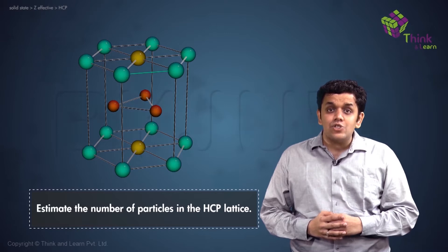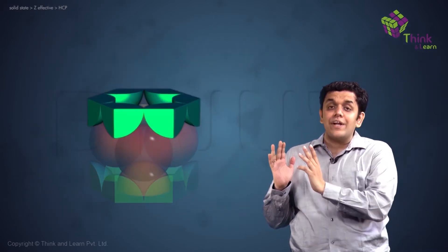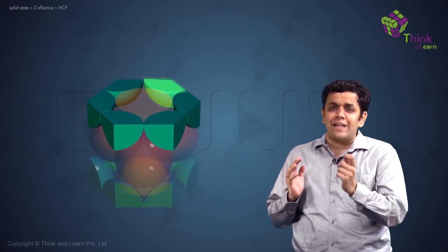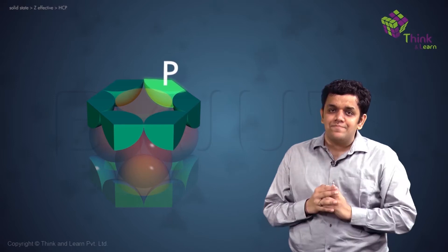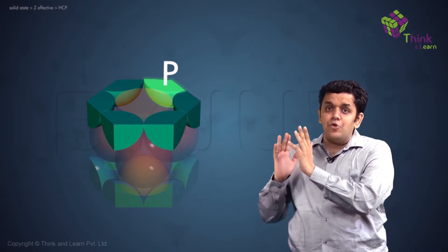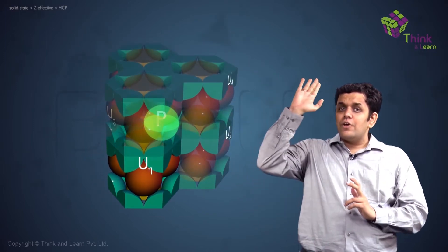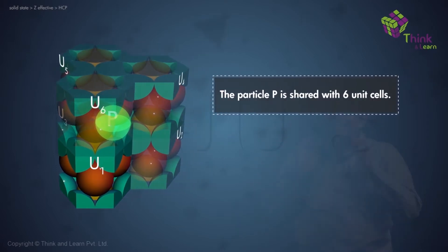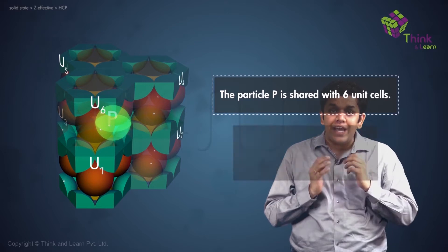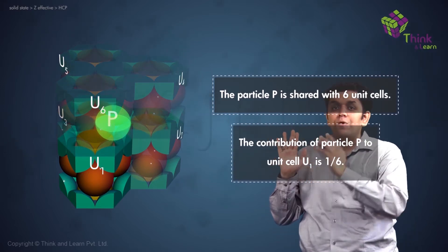Now, let us try and solve this together. Firstly, let us look at the particles located at the six corners of the top face of the hexagon. Let us take one such particle, say particle P. Now the particle P is being shared between unit cell U1, U2, U3 and U4, U5 and U6. Totally six unit cells the particle is getting shared between. So hence, the contribution of particle P towards unit cell U1 would be one-sixth.